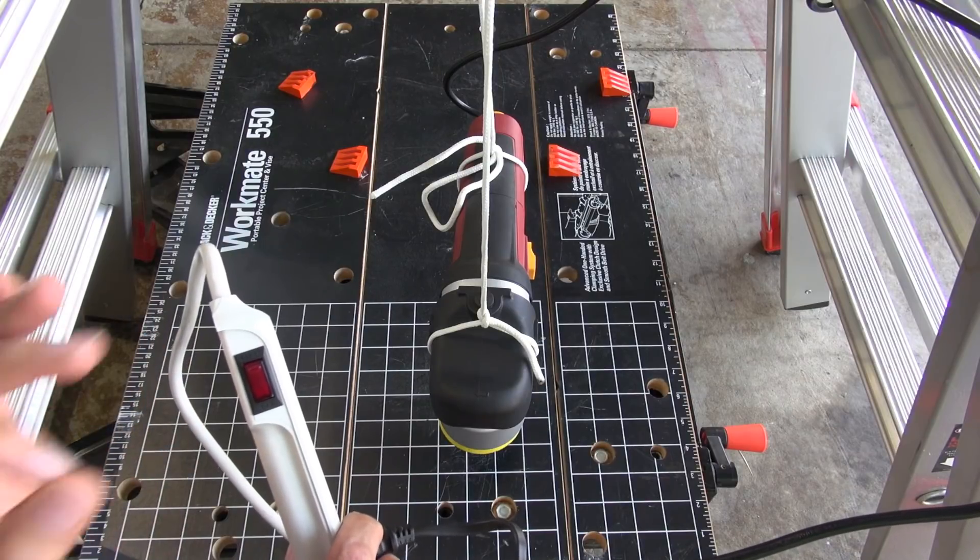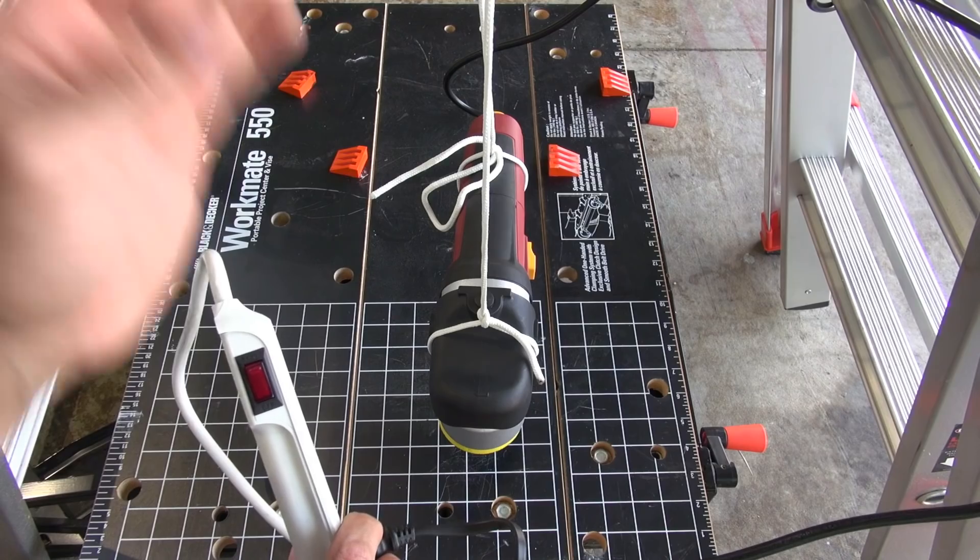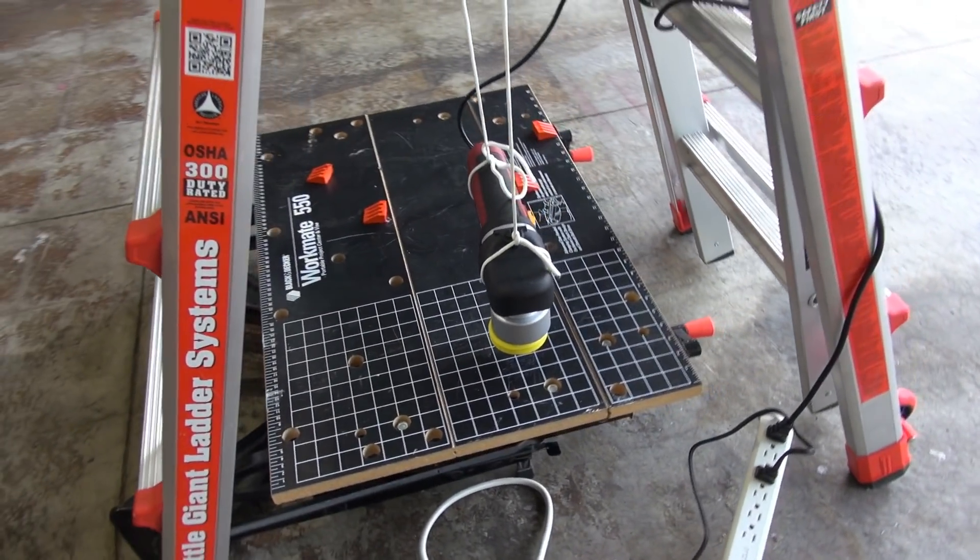In this video I'm going to be making two different vibration tests. I have my Harbor Freight Dual Action Polisher that I have suspended using ropes.